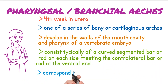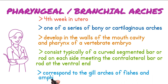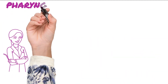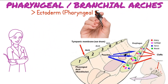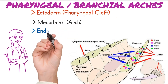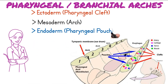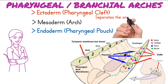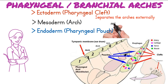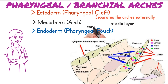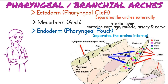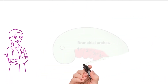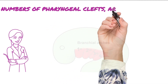Pharyngeal arches correspond to the gill arches of fish and amphibians. Pharyngeal arches consist of three layers: the ectoderm, which forms the pharyngeal clefts; the mesoderm; and the endoderm, which forms the pharyngeal pouches. Ectoderm is the outer layer and separates the arches externally. Mesoderm is present between ectoderm and endoderm — it contains cartilage rod, muscle, artery, and nerve. Endoderm is the inner layer which separates the arches internally.